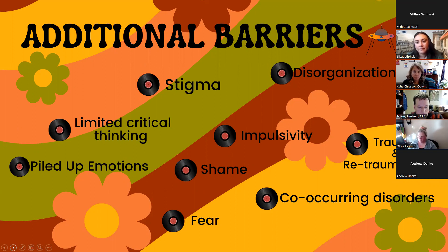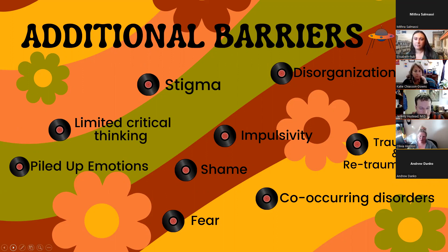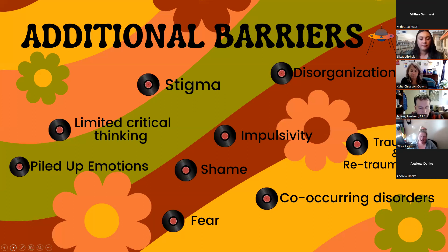One of the big ones is obviously stigma. You also have piled-up emotions, and when you're trying to communicate with someone who has piled-up emotions combined with impulsivity and lack of emotional regulation — or a decreased ability to regulate those emotions — that's going to make communication really difficult, and it's largely going to be perceived in the wrong way.